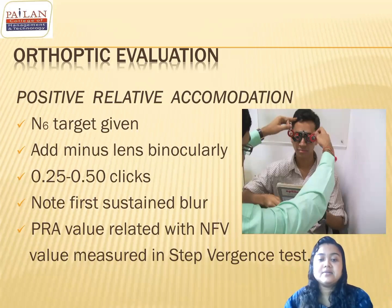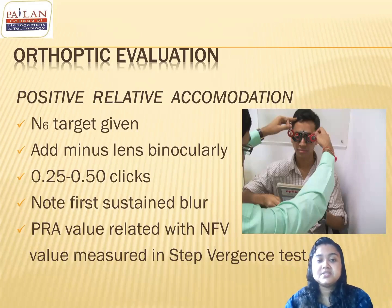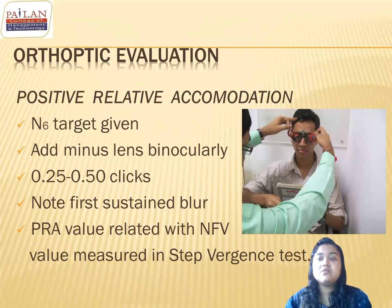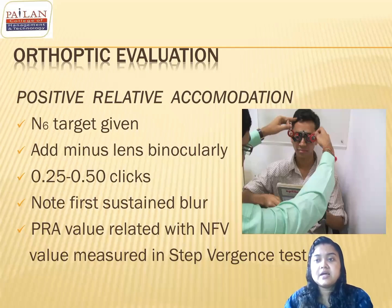If the PRA value is higher — if you get a minus 3.5, minus 4, minus 5 PRA value — that can happen in some patients. That means the patient may be under-corrected. If he is a myopic patient, he may be under-corrected, and in that case he can get a greater PRA value. Also, if the refraction is not correct, you can get a higher PRA value.